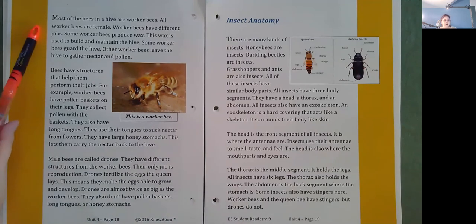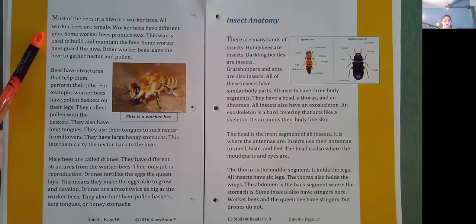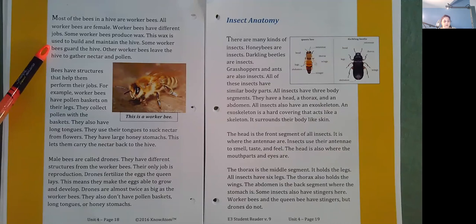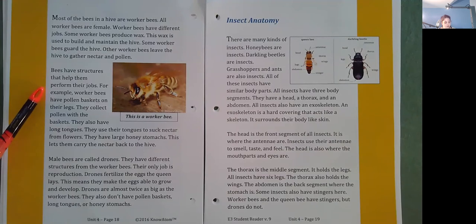Most of the bees in a hive are worker bees. All worker bees are female. Worker bees have different jobs. Some worker bees produce wax. This wax is used to build and maintain the hive. Some worker bees guard the hive. Other worker bees leave the hive to gather nectar and pollen.